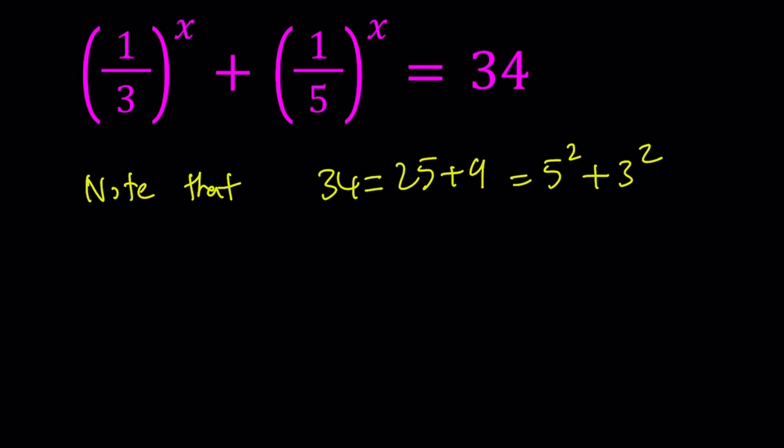And our bases are 1 third and 1 fifth, so that should give you an idea. Now we can write our equation as 3 to the power negative x plus 5 to the power negative x equals 3 squared plus 5 squared.